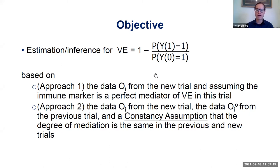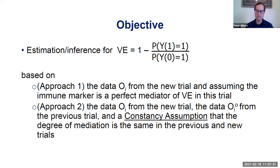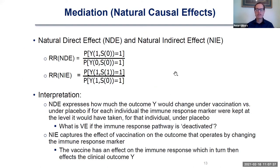The first approach uses only data from the new trial and assumes the immune marker is a perfect mediator of vaccine VE in this trial. The second approach relaxes that assumption, also uses data from the previous trial, and uses a constancy assumption that the degree of mediation by the marker is the same in the previous trial and in the new trial. This part of the talk is really a brief primer on mediation.